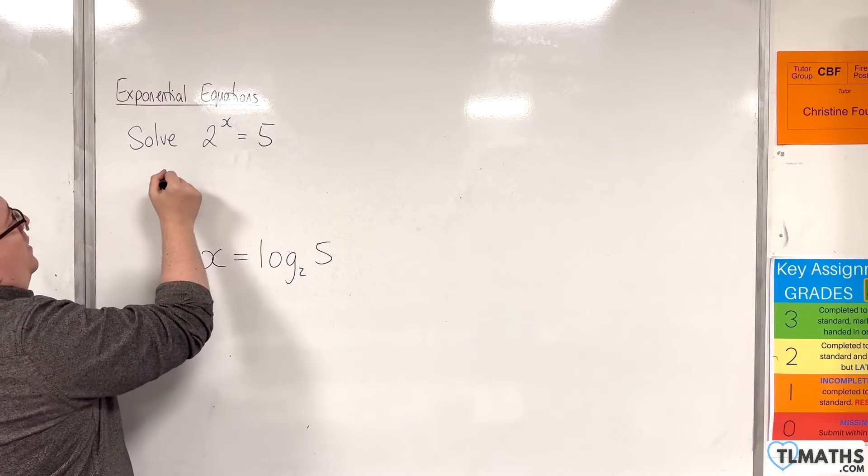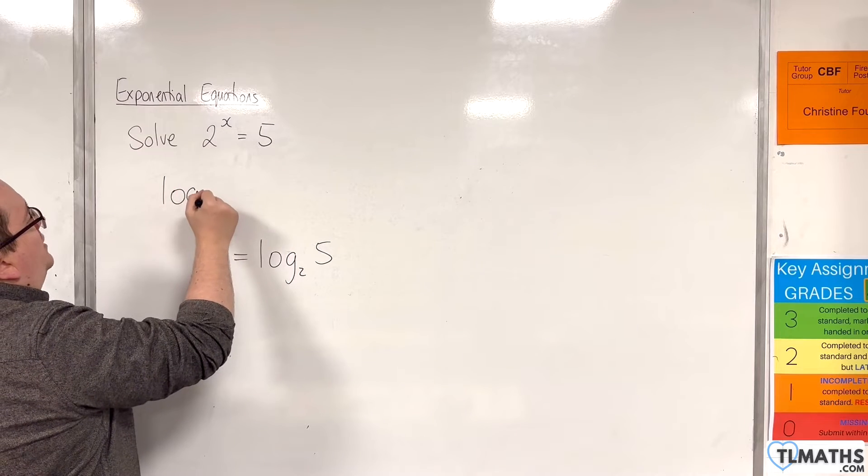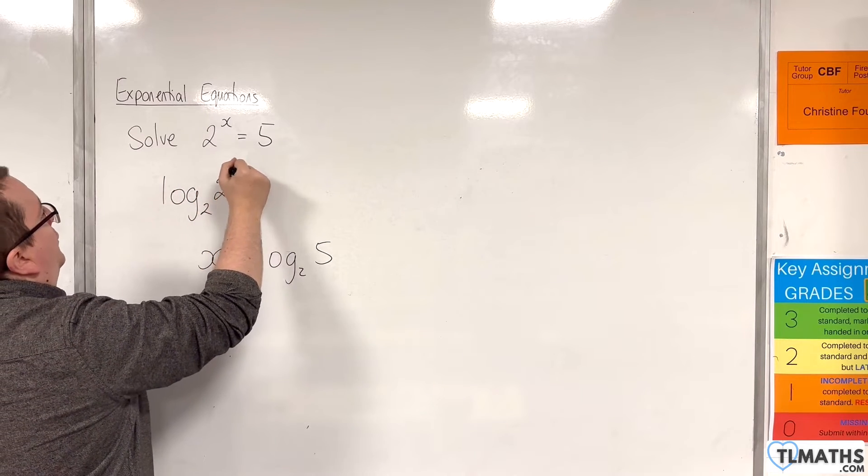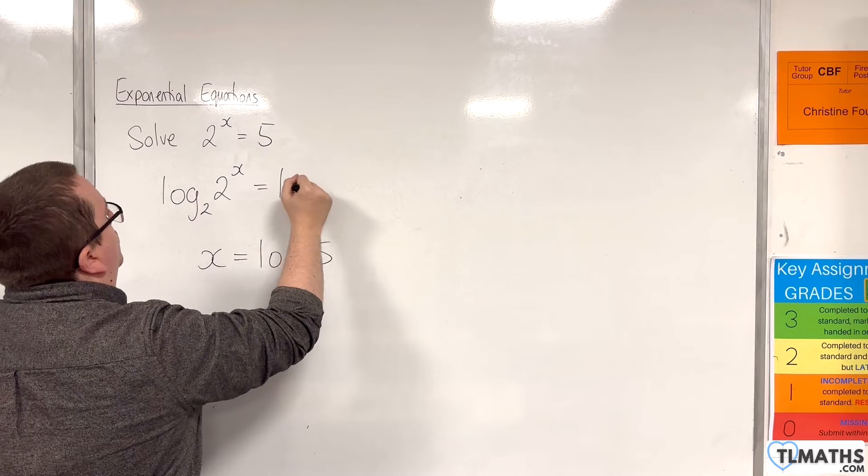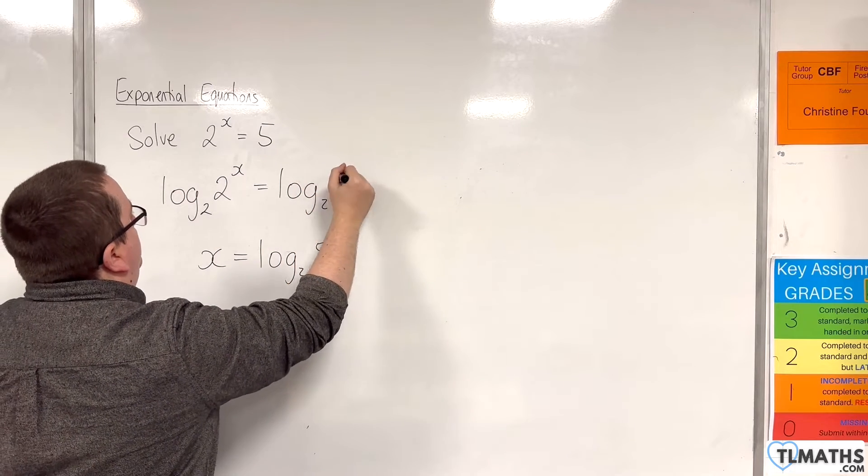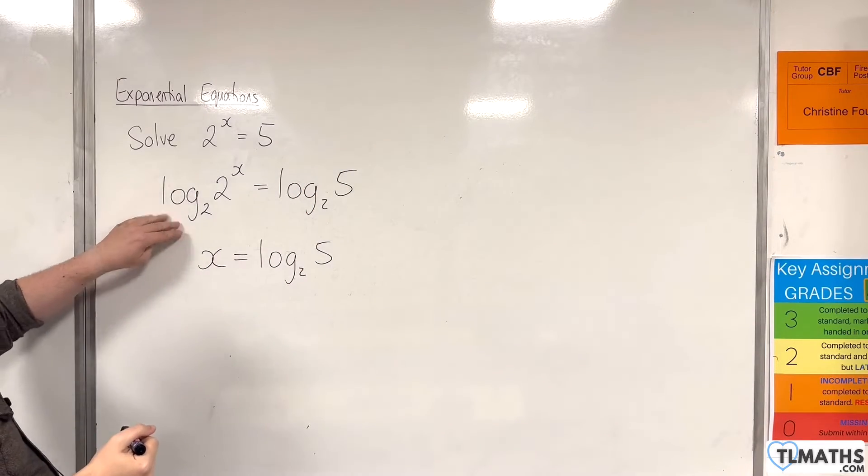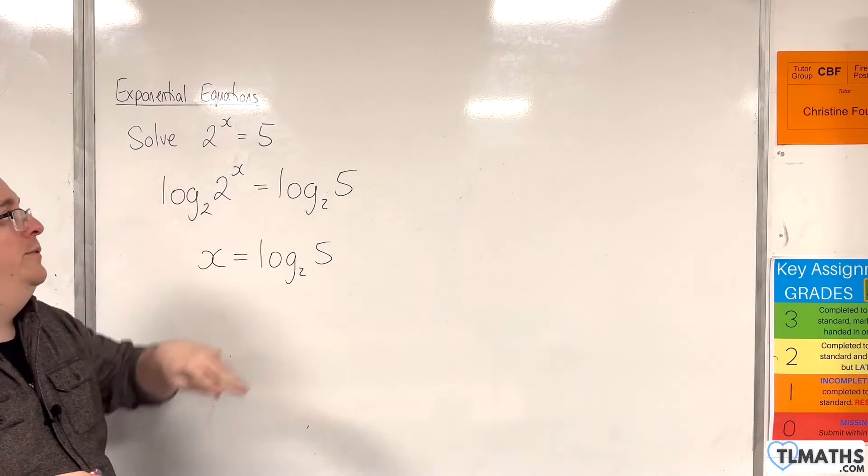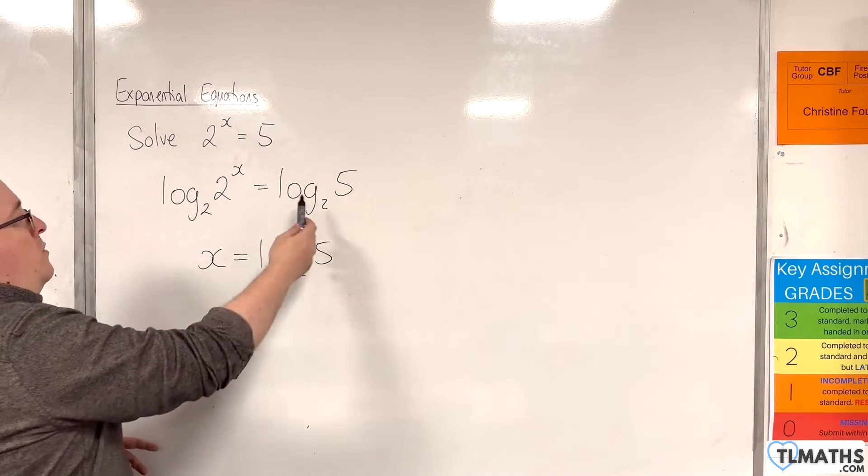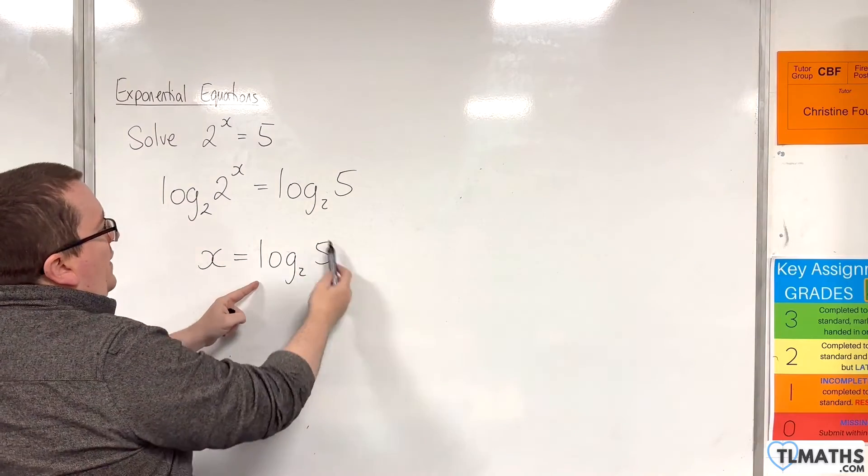So, what I mean by that is we are taking log base 2 of both sides of the equation. So, log base 2 of 2 to the x is equal to log base 2 of 5. Now, this right-hand side is what we're familiar with. That's the answer.